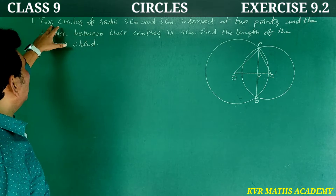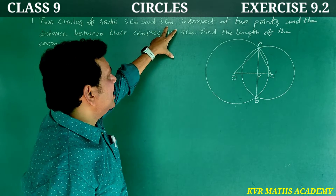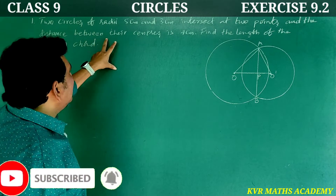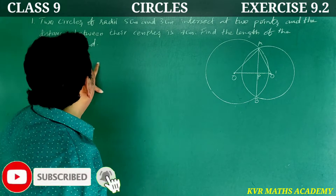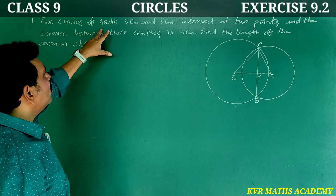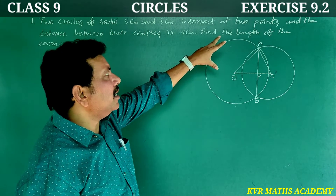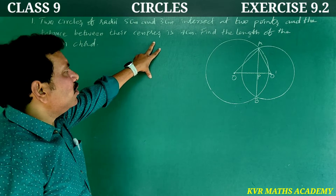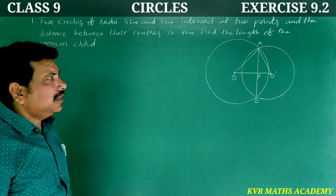This is the first question: Two circles of radii 5 cm and 3 cm intersect at 2 points, and the distance between their centers is 4 cm. Find the length of the common chord.